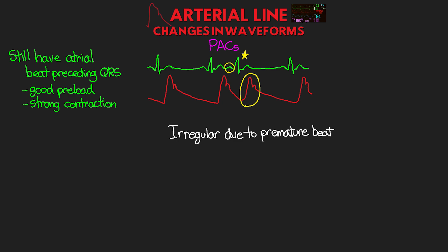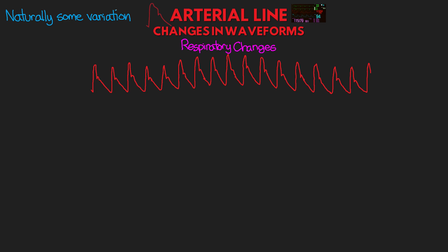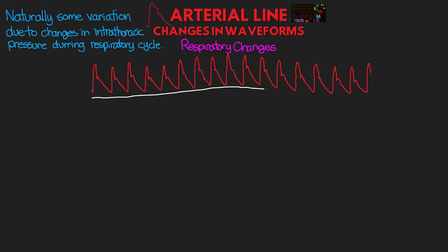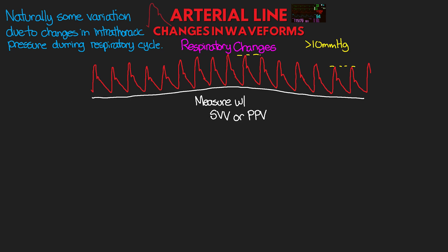Let's talk about some other changes we can see in our waveforms. The first and most common are going to be changes from our respiratory pattern. There's naturally some variation due to changes in intrathoracic pressure during the respiratory cycle. This can potentially be an indication that your patient may need fluids, as discussed in a previous lesson. We see these changes manifesting as increasing and decreasing waveforms as the respiratory cycle changes. We can measure these with either stroke volume variation (SVV) or pulse pressure variation (PPV), and when we see this cycling pattern with changes more than 10 mmHg, we refer to this as pulsus paradoxus.